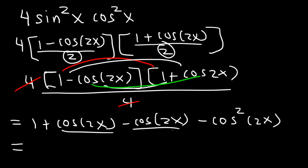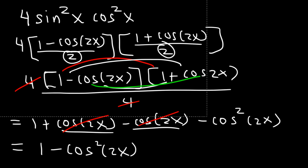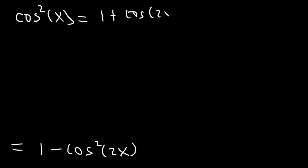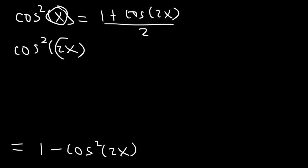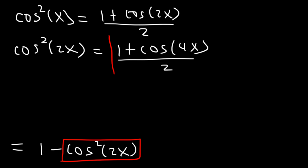Now let's simplify by combining like terms. The two cosine 2x terms cancel, adding up to 0, leaving us with 1 minus cosine squared 2x. We can apply the power reducing formula again on cosine squared 2x. Since cosine squared x equals (1 plus cosine 2x)/2, doubling the angle from x to 2x gives cosine squared 2x equals 1 plus cosine 4x divided by 2.